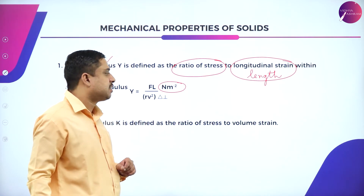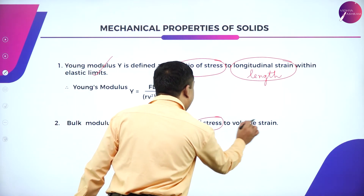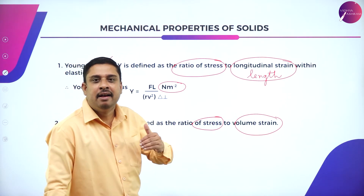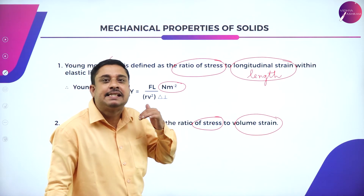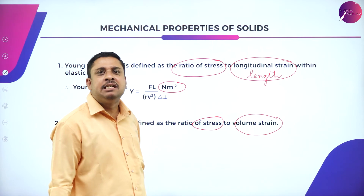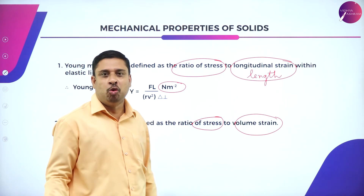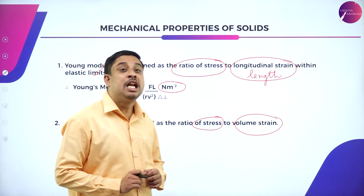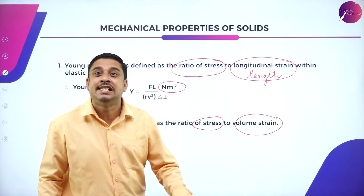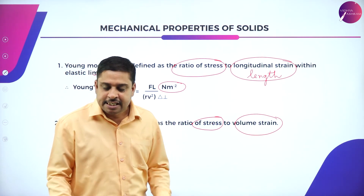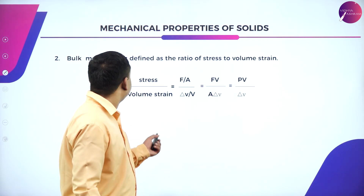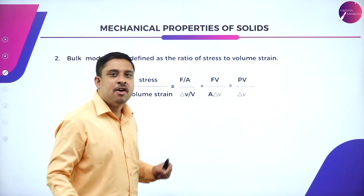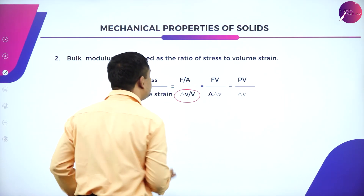The second type is bulk modulus, defined as the ratio of stress to volume strain. When stress is applied and the change occurs along the volume — that is, the volume of the body changes as a result — that is described by bulk modulus. Young's modulus relates to change in length; bulk modulus relates to change in volume. It is given by stress divided by volume strain, where stress is force divided by area.